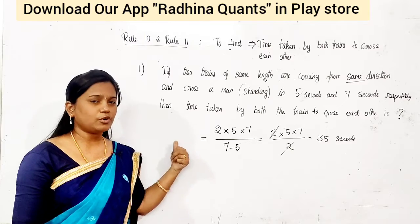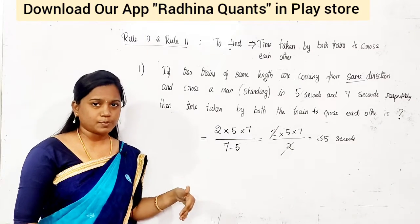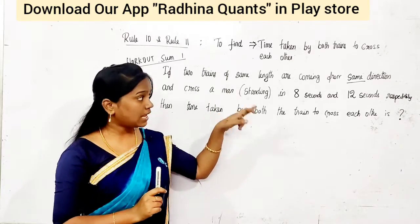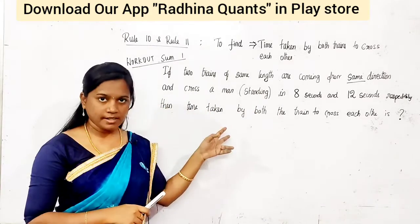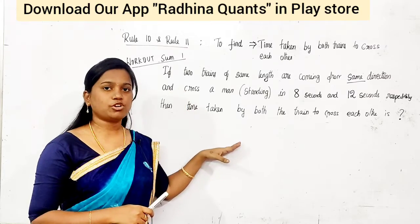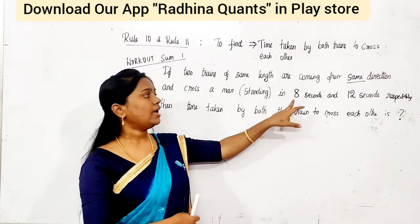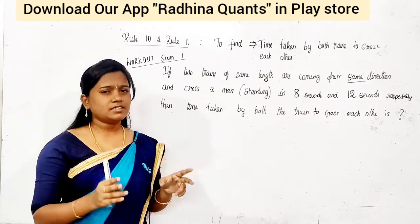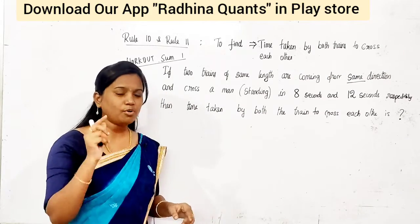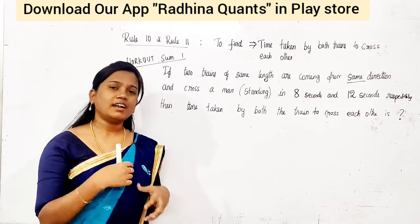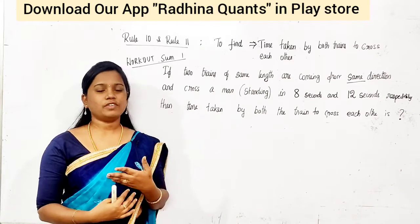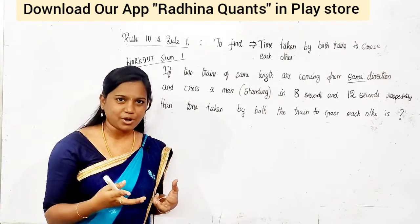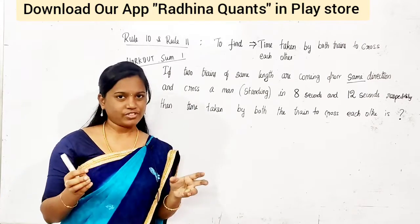Now you have a workout sum. Two trains of the same length, same direction, cross a standing man in 8 seconds and 12 seconds respectively. Solve it in the comments. If you find this video useful, comment and give feedback.